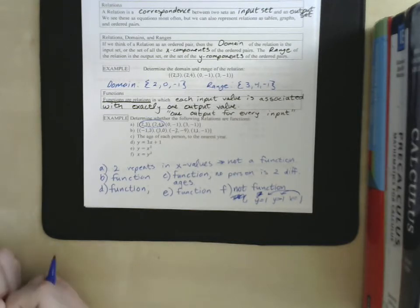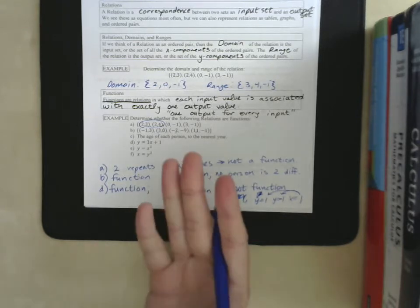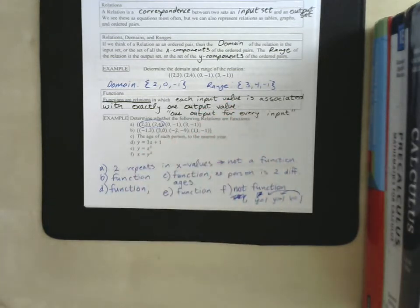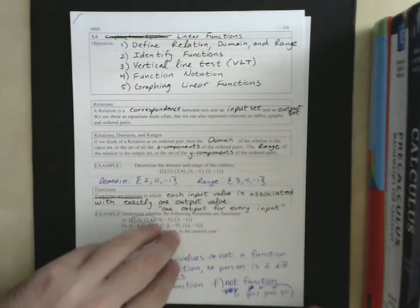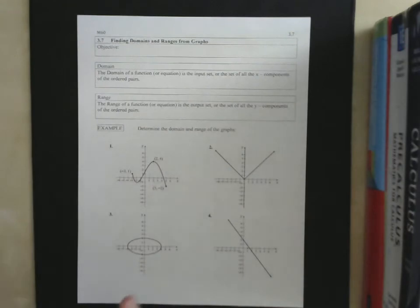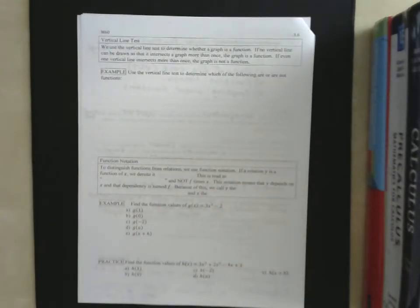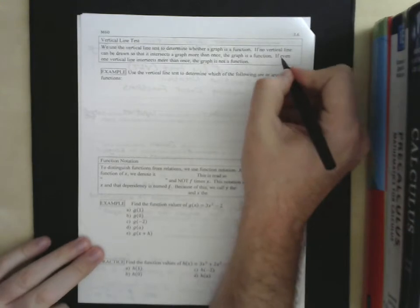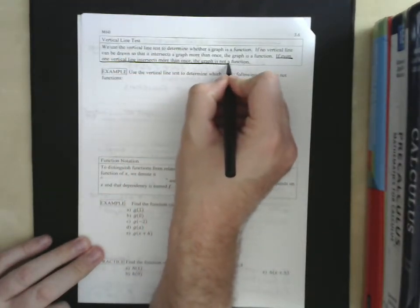And, as it turns out, when we're looking at stuff like this, either ordered pairs or description or equation, it's a little bit harder to think about sometimes. So, we have on our next page a pretty famous test. You've probably heard of it. Set it in our objectives. The vertical line test. So, we use the vertical line test to determine whether a graph is a function. This is why it's so important to be able to graph equations. If no vertical line can be drawn so that it intersects a graph more than once, the graph is a function. If there's even one vertical line that intersects more than once, it's not a function. That's the important part. Even one vertical line intersects more than once, the graph is not a function.